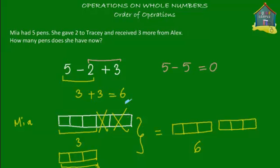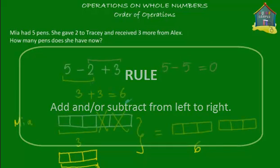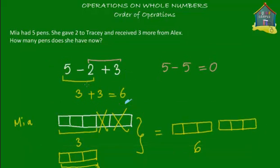So what do we conclude from here? Rule number one: do all the additions and subtractions from left to right. Now how about if we have multiplications and divisions instead? What do we do then? Let's take another problem.